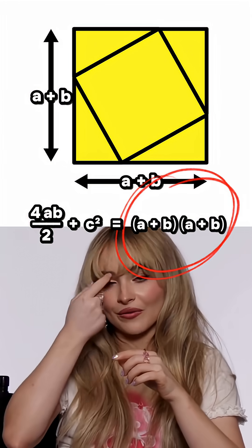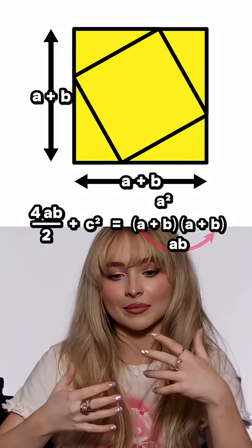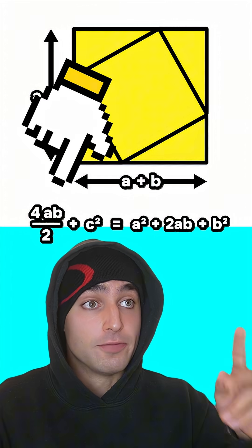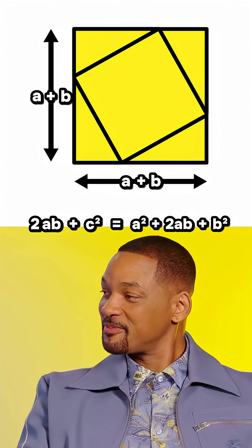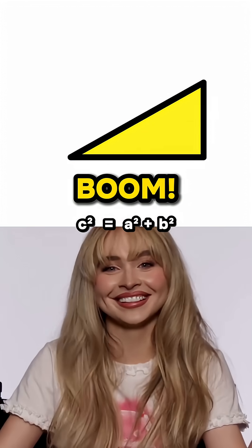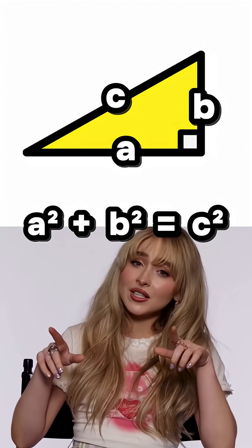And if you expand the right side with FOIL, you get A squared plus AB plus another AB, so two AB plus B squared. Four AB over two is two AB, so two AB on both sides. Then why not just get rid of it? Boom! A squared plus B squared equals C squared.